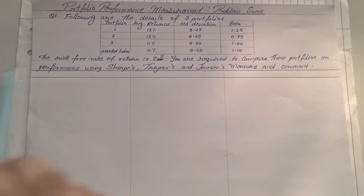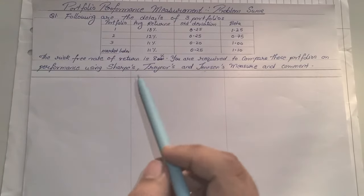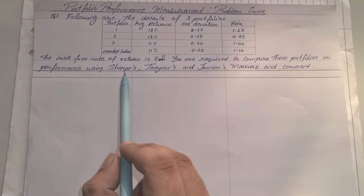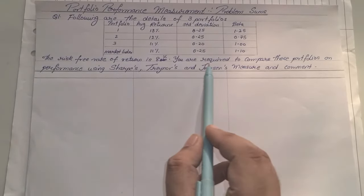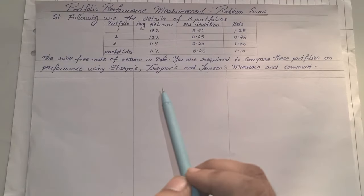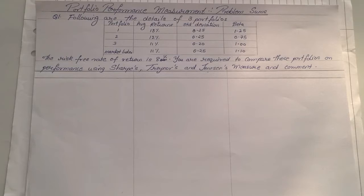Under the chapter portfolio performance measurement, the sums that usually come are based on calculating the performance using Sharpe's, Treynor's and Jensen's measure. We'll be taking a very important sum which will cover all three types of measurement. This is a very important topic for all TY BMS students for their semester five. In the exam they can ask any one, any two, or even all three.